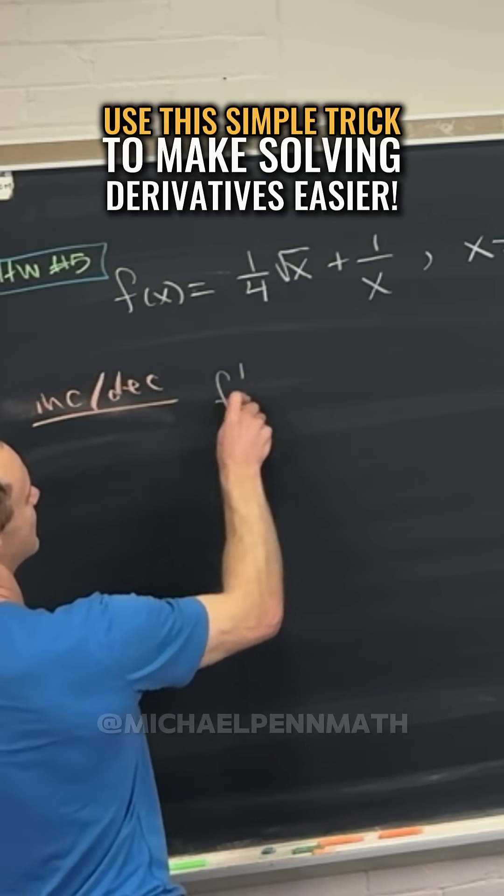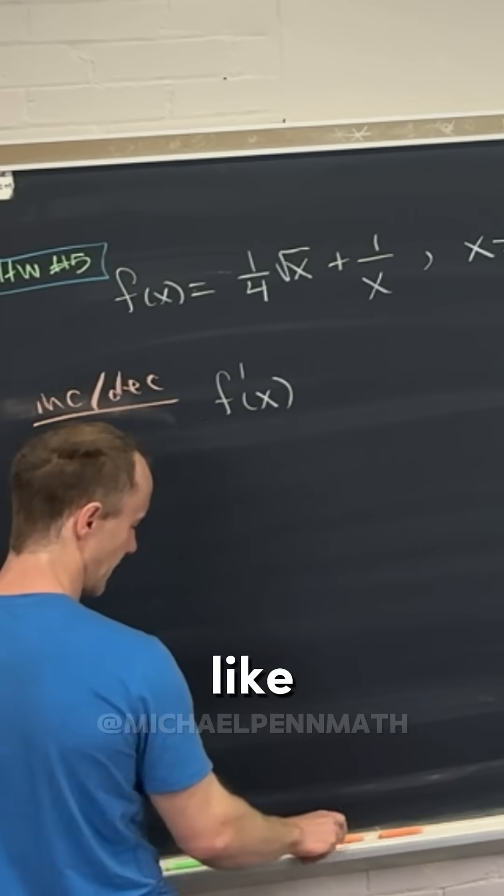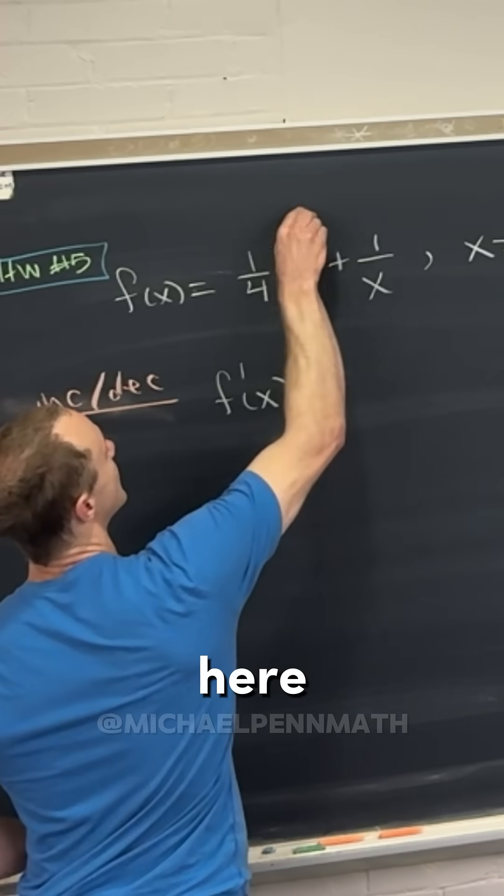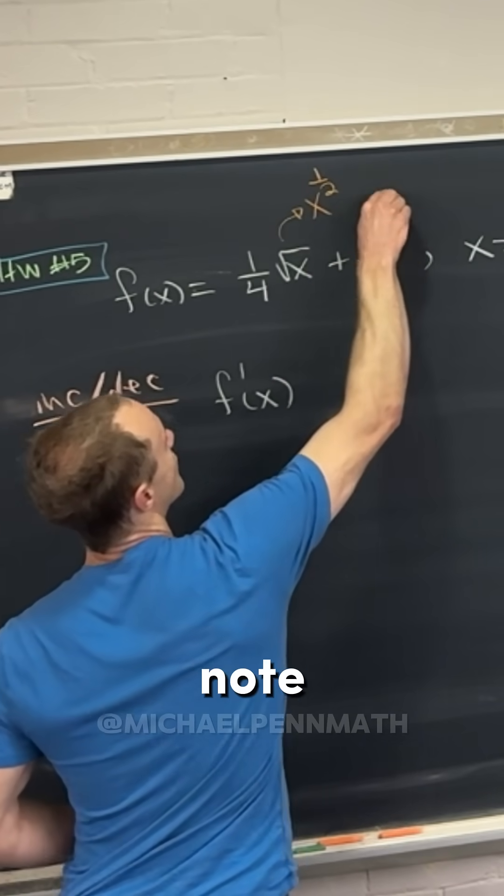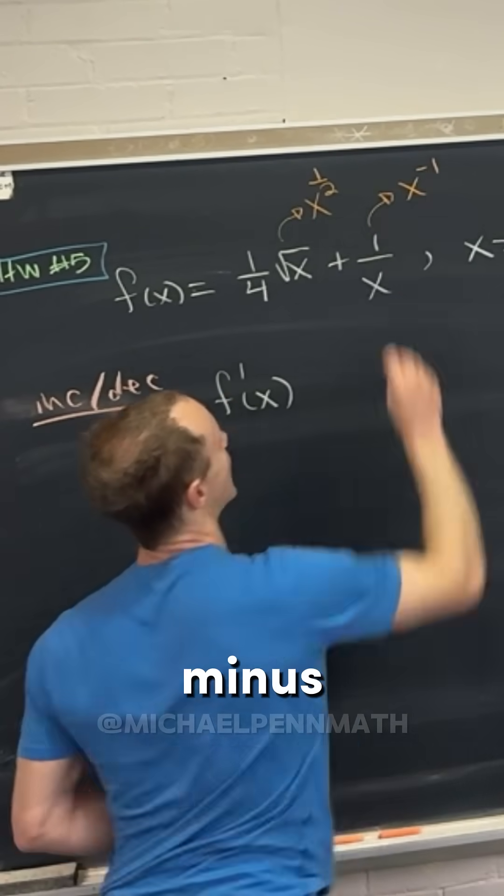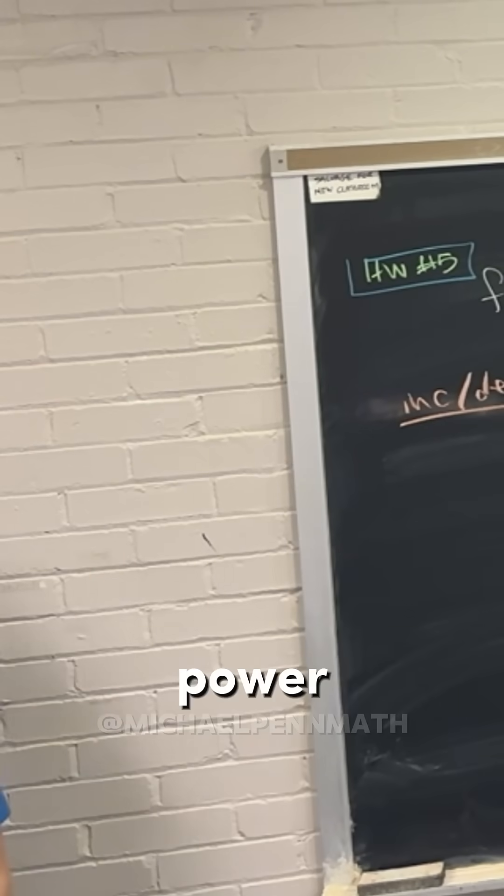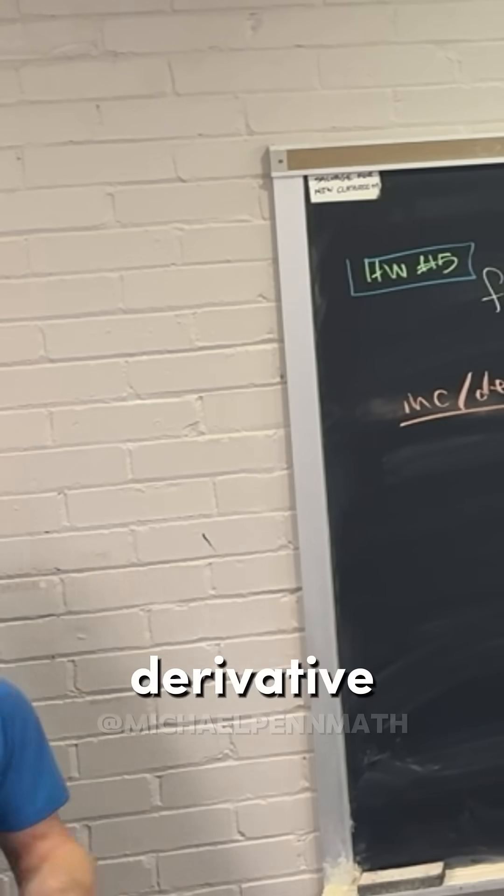So let's determine the derivative. I'm just going to put a little note up here that this is x to the half, and a little note up here that this is x to the minus one, so that we can use the power rule efficiently to take the derivative.